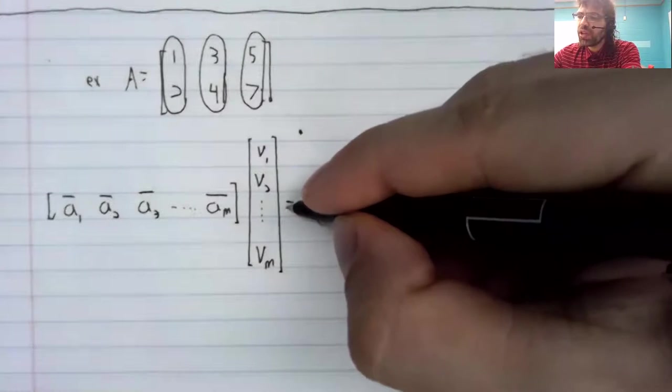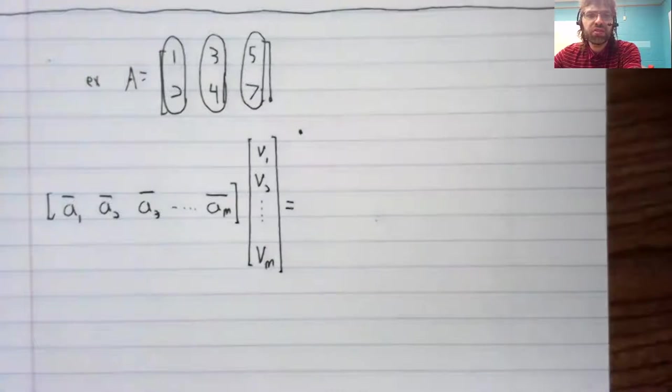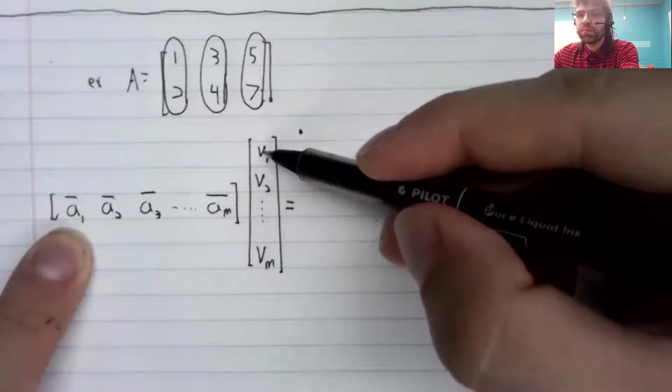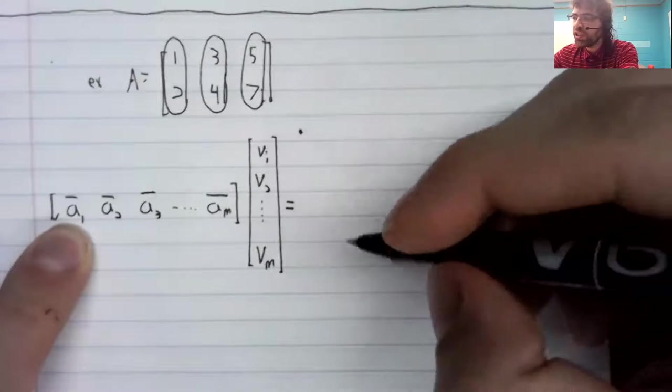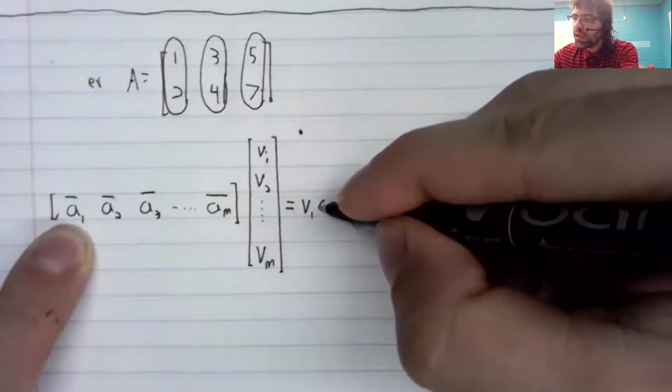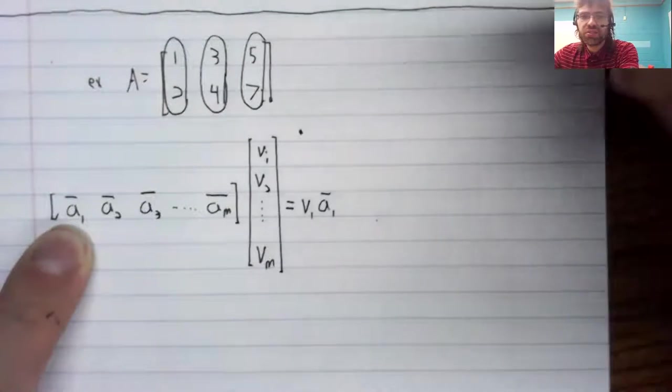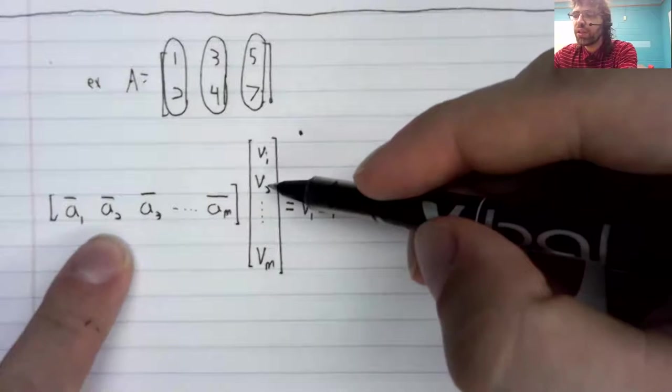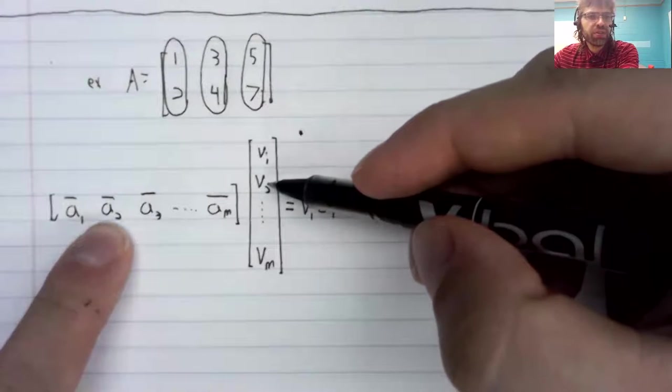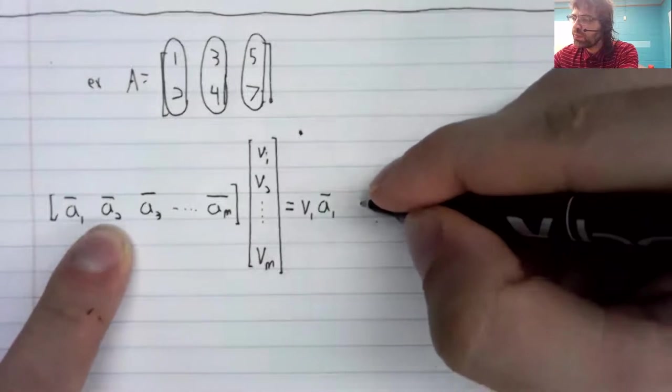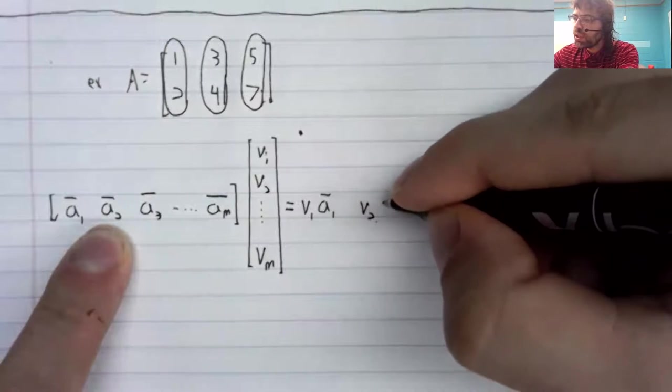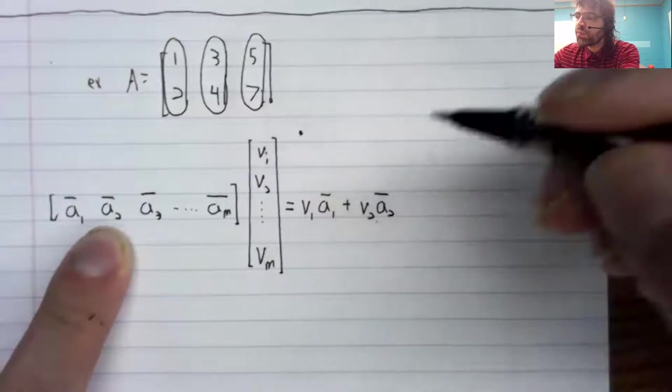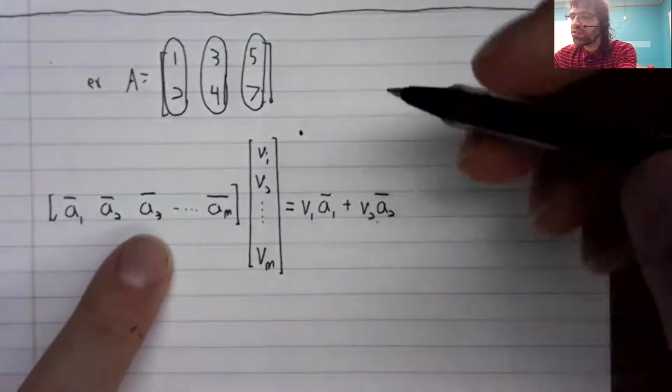Then this multiplication will be defined as follows. Take this first column and take this first entry. And do this scalar multiplication between them. Now take the second column and the second entry. Do this scalar multiplication. And we're going to add these together.